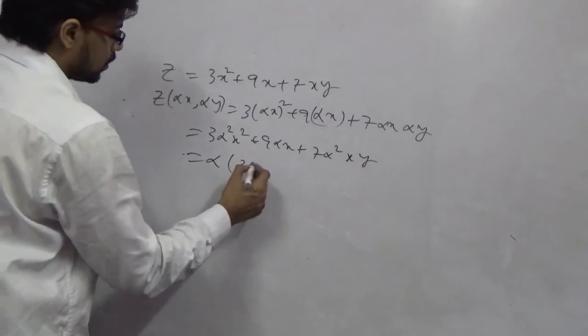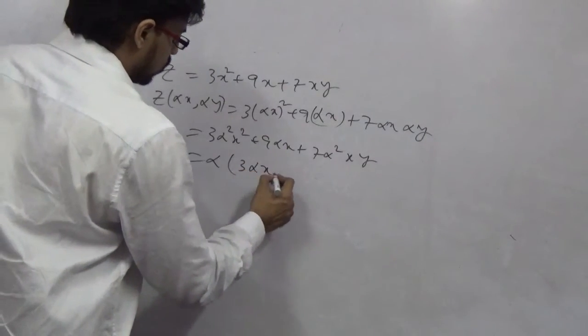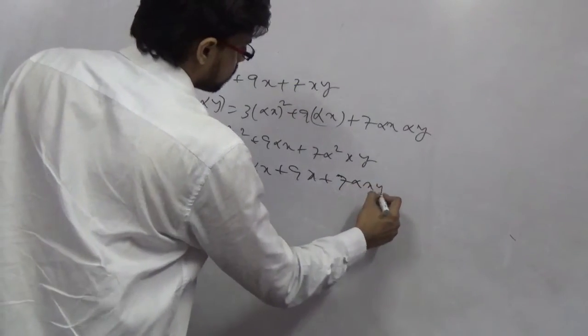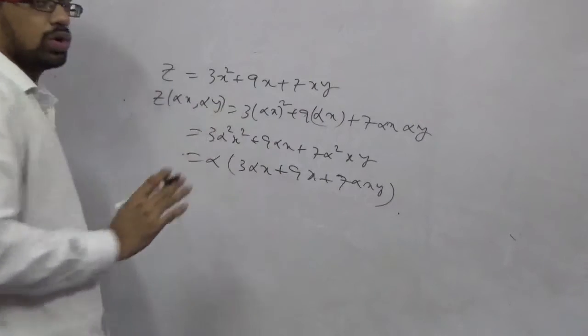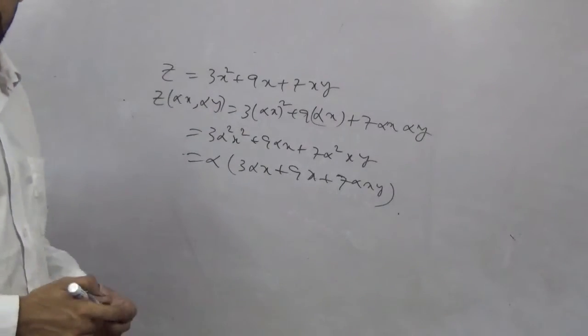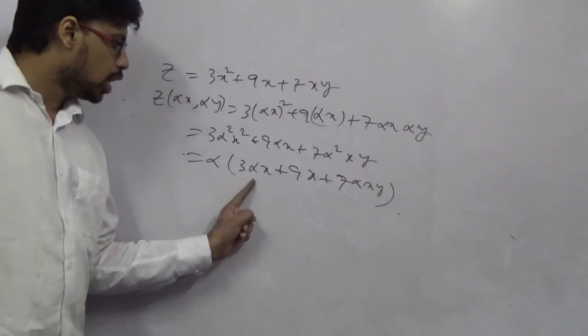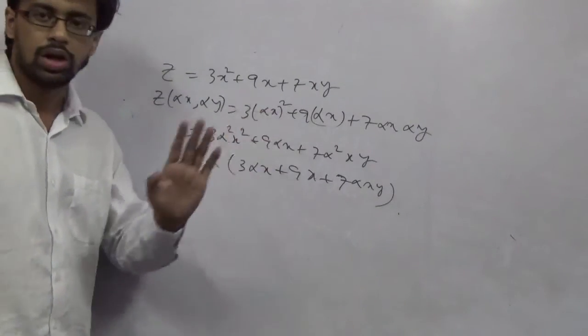You can take alpha common. You can take simply alpha common from this. I hope you can calculate all this by yourself. Now, the main problem. You can take x as well common, but we don't need to take x common. Only the alpha part we need to take common. If you take this alpha common from here, you see, we are not back into the old equation. Are we back into the old equation? No.